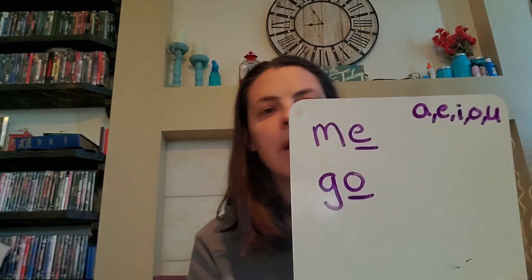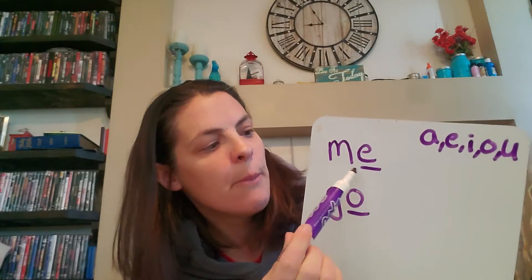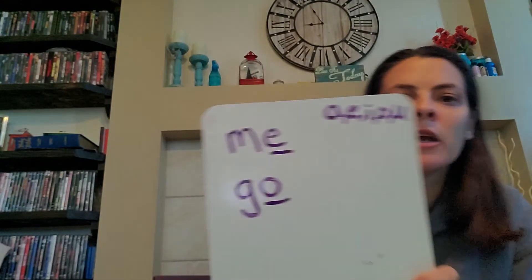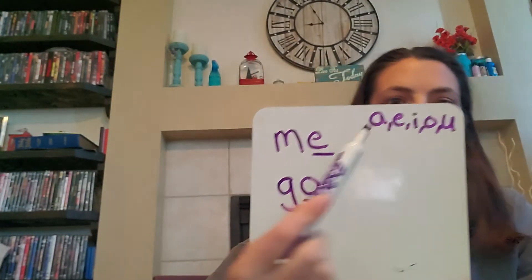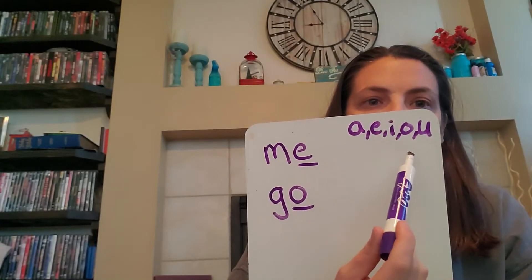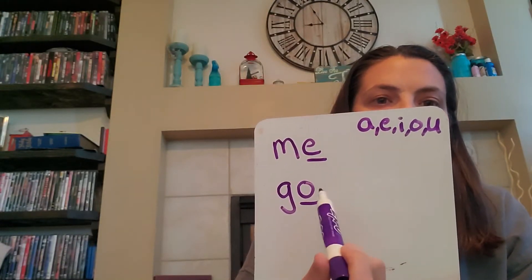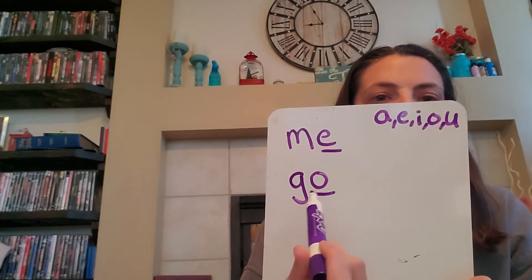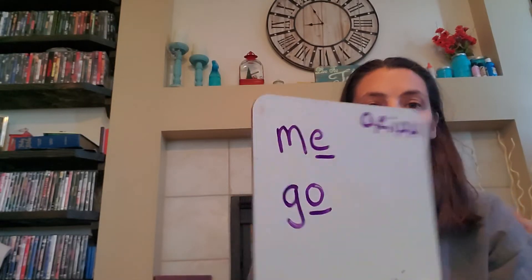M-E, G-O. All right, here we go. Here's mine: M-E — I underlined it. G-O — I underlined it. Do you guys remember why we underlined those two? That's right. If it's an A, E, I, O, or U, it is open, and it makes its own sound. So M-E makes its own sound, so we underline it. G-O makes its own sound, so we underline it.